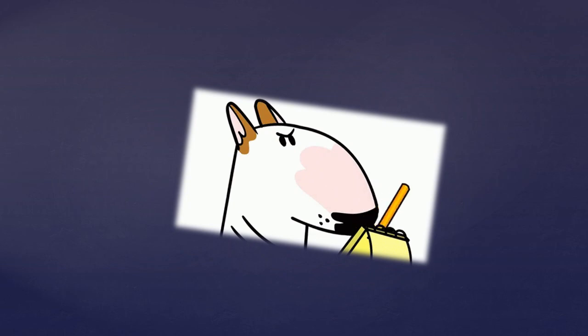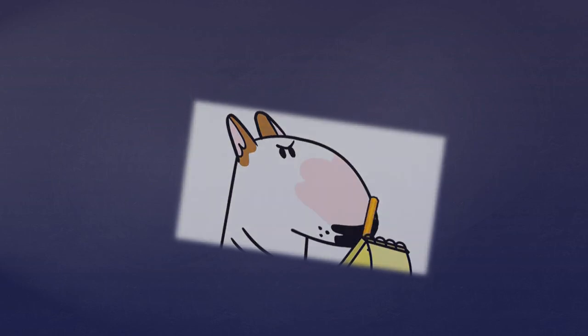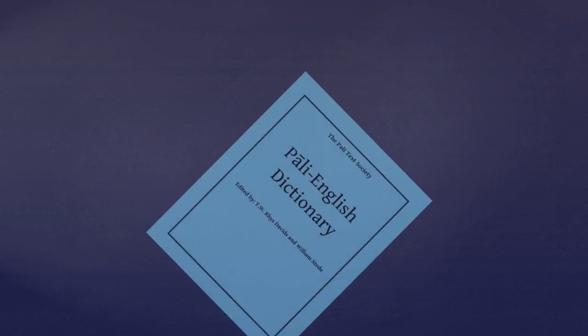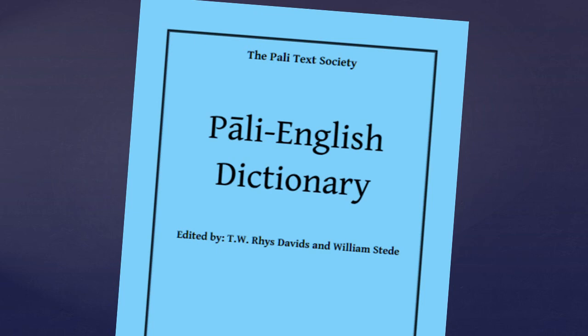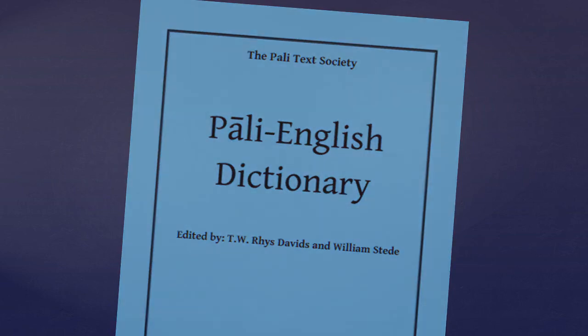So that brings us to the end of this chapter, lesson one. Feel free to do the exercises. I'm not going to go through them here. Warder gives the answers to exercises one through six at the back of his book. But note that Warder's translations for some words are not always standard. So I suggest you refer to dictionary definitions. And I've put a link down in the description to Arjan Bramali's walkthrough of this chapter. And next week we'll go through lesson two. And in the meantime, feel free to check out my other tutorials.